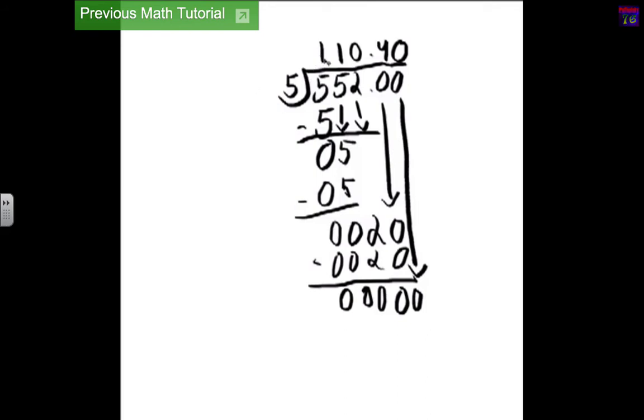So, what this would mean is each person would get $110.40. So, if we had $552 and we wanted to divide it in 5 people, each person would get $110.40. So, that's how you divide with money.